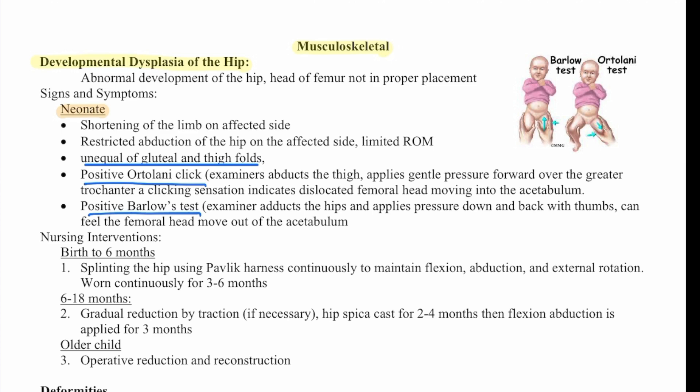Nursing interventions depend on the age. From birth to six months, there will be splinting of the hips with a Pavlik harness continuously to maintain flexion, abduction, and external rotation — worn continuously for three to six months.